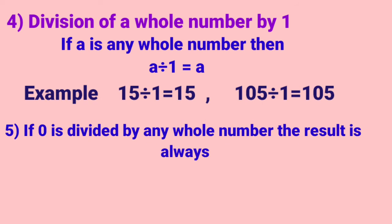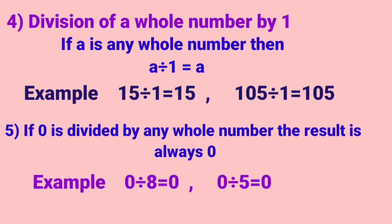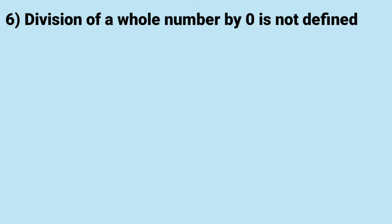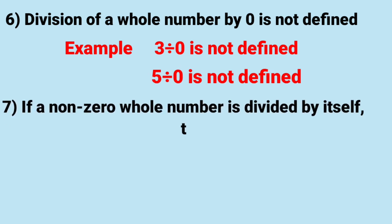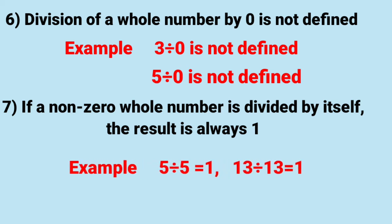Number 5: If 0 is divided by any whole number, the result is always 0. For example, 0 divided by 8 result is 0. 0 divided by 5 result is 0. Next, we have division of a whole number by 0 is not defined. For example, 3 divided by 0 is not defined. 5 divided by 0 is also not defined. Number 7: If a non-zero whole number is divided by itself, the result is always 1. For example, 5 divided by 5 result is 1. 13 divided by 13 result is 1.